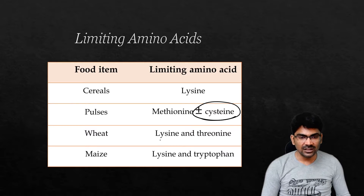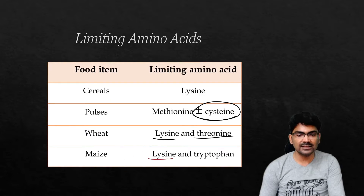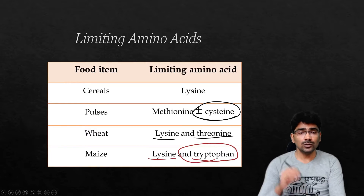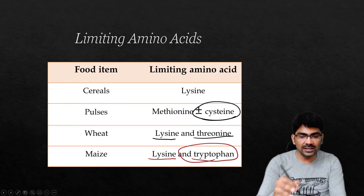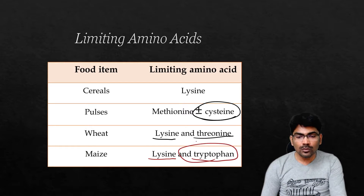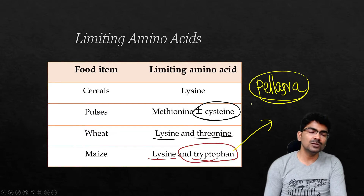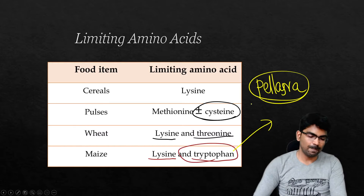Wheat lacks lysine as well as threonine. What about maize? Maize lacks lysine as well as tryptophan. So staple eating of maize will lead to pellagra. Maize eaters develop pellagra.